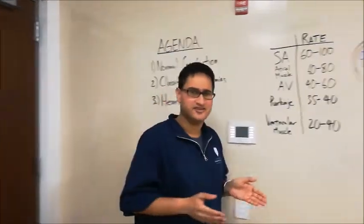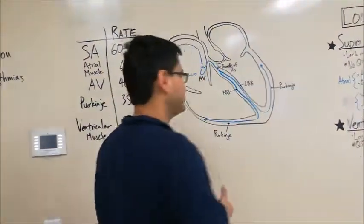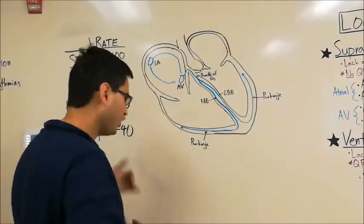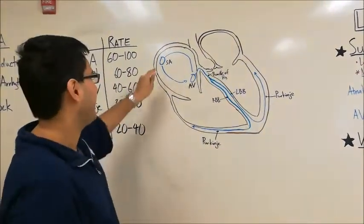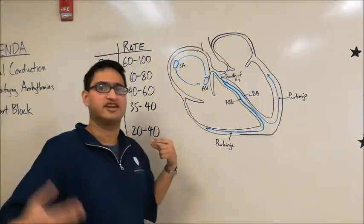So to start, let's talk about normal conduction in the heart. Here, our great artist and videographer, Peter Shea, has drawn a heart with the conduction system in blue. Normally, all electrical impulses in the heart will start at the SA node, indicated here by this blue circle, also known as the sinoatrial node.